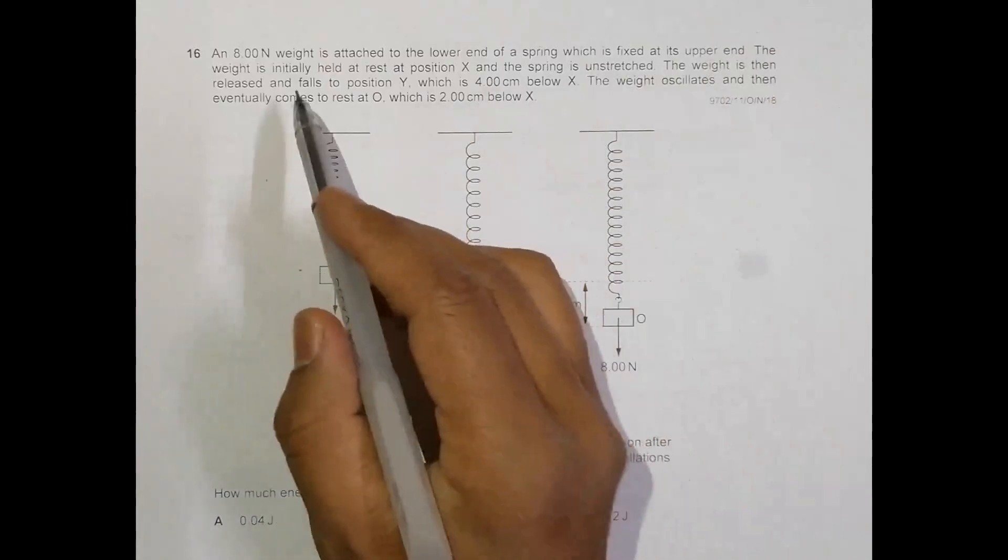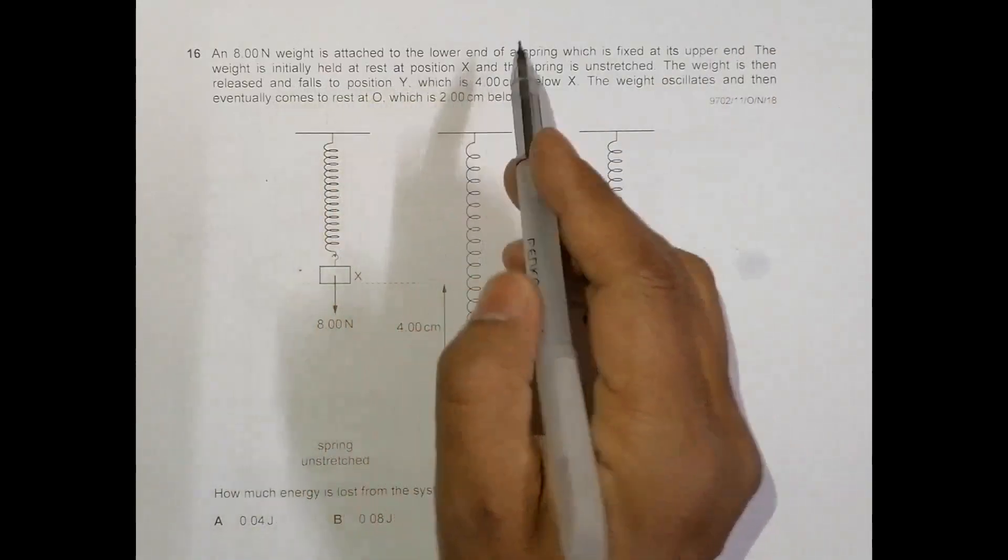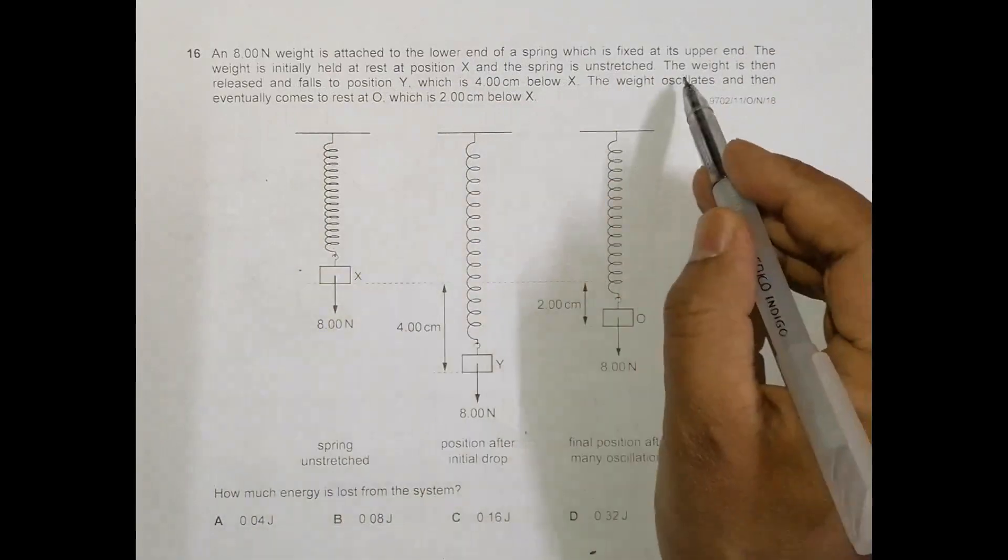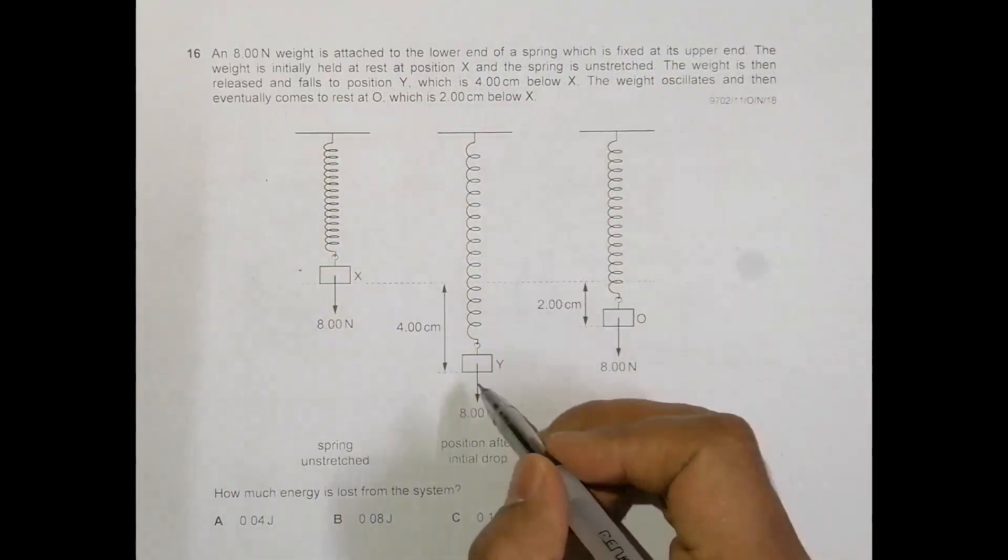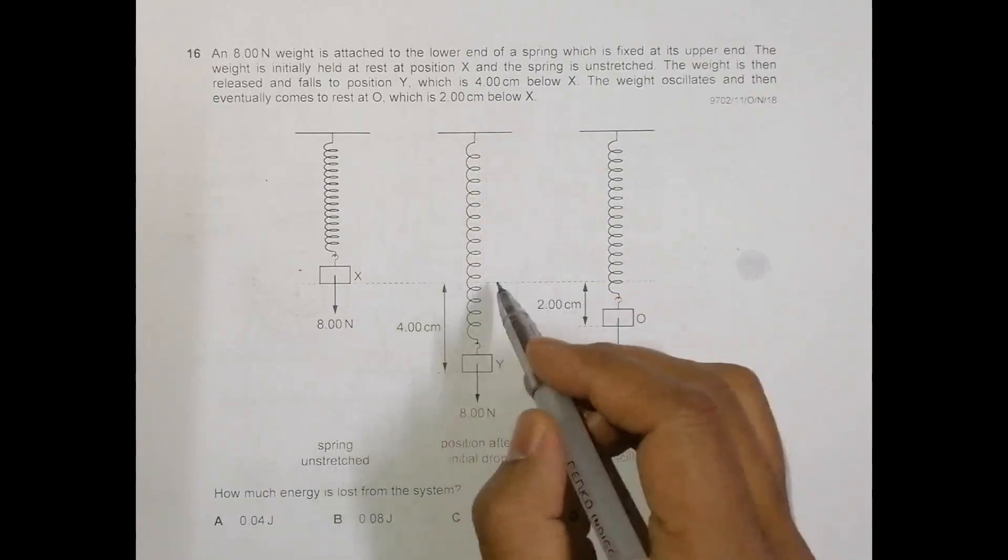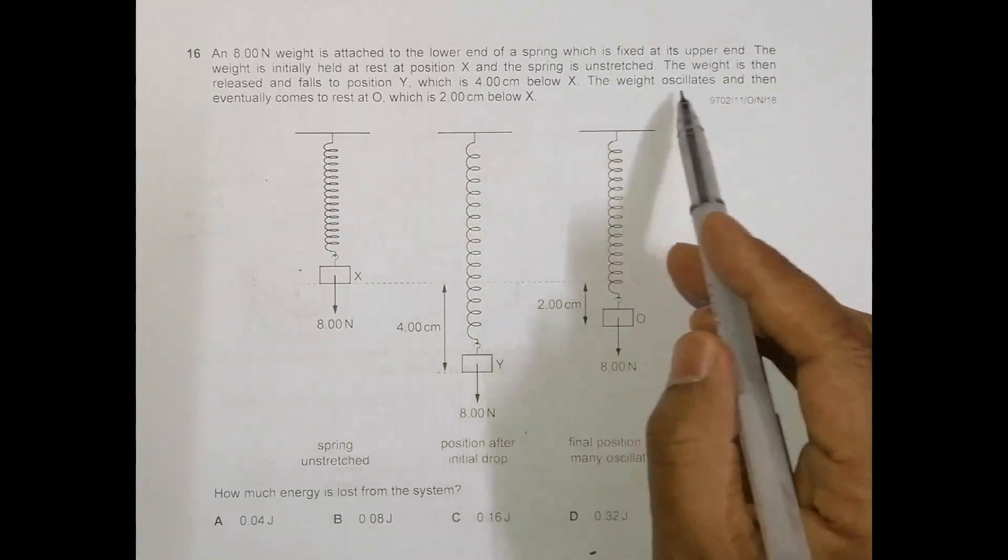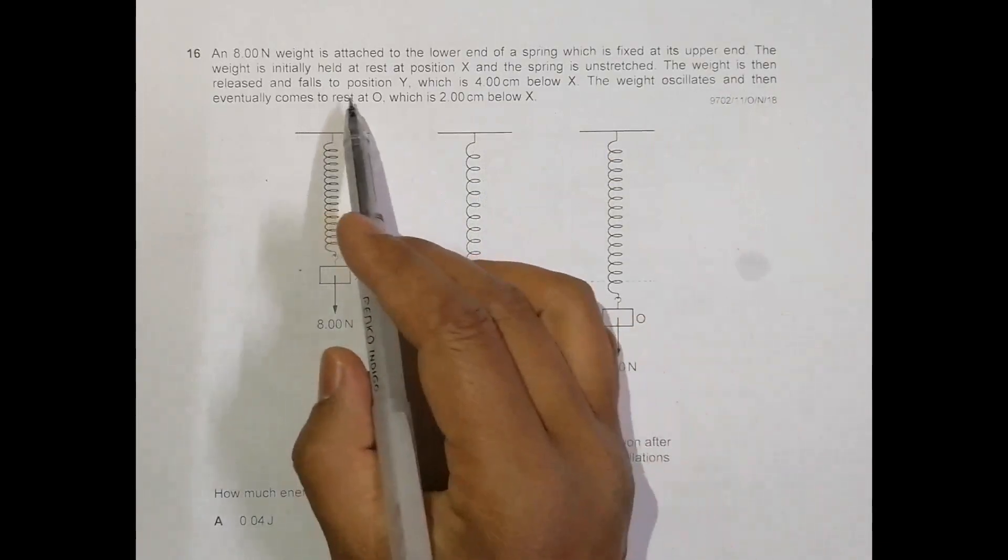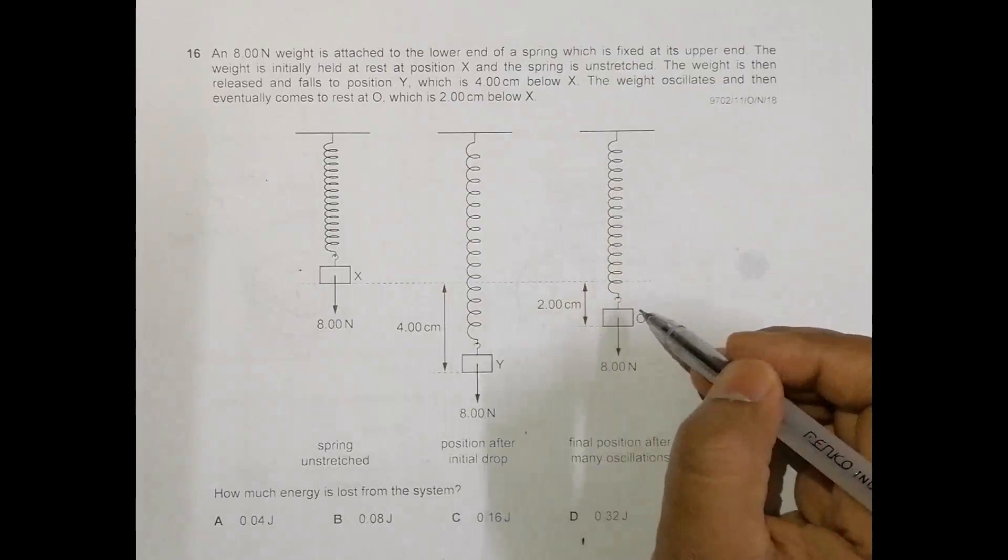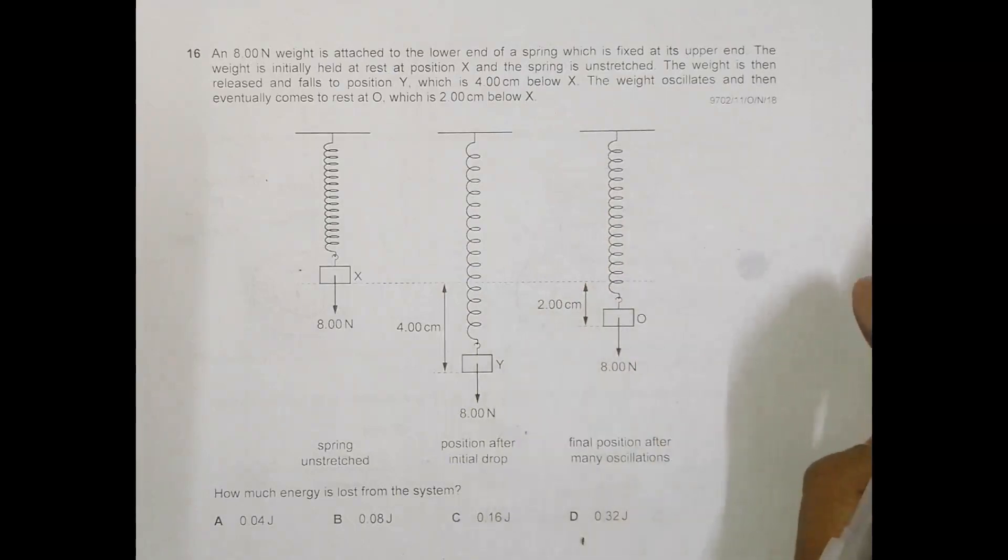The weight is initially held at rest at position X and the spring is unstressed. The weight is then released and falls to position Y, which is 4 centimeters below X. The weight oscillates and then eventually comes to rest at O, which is 2.00 centimeters below X. How much energy is lost from the system?